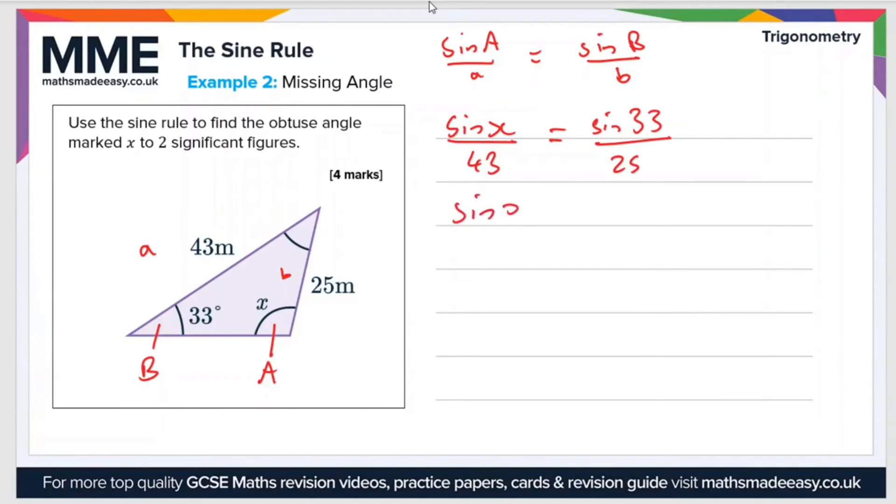So sine X is equal to 43 sine 33 divided by 25. All I've done there is I've just multiplied up the 43 from the left-hand side, so it's now on the right-hand side, to get sine X on its own.